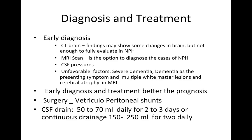Coming to diagnosis and treatment: early diagnosis results in better prognosis. CT brain may show some changes but is not sufficient for full evaluation. MRI is the better option as it can identify white matter changes and assess CSF pressure dynamics, so MRI scan is always indicated in a patient with NPH. Unfavorable factors in NPH include: cardiovascular dementia, dementia as the presenting symptom, and multiple white matter lesions and cerebral atrophy on MRI.